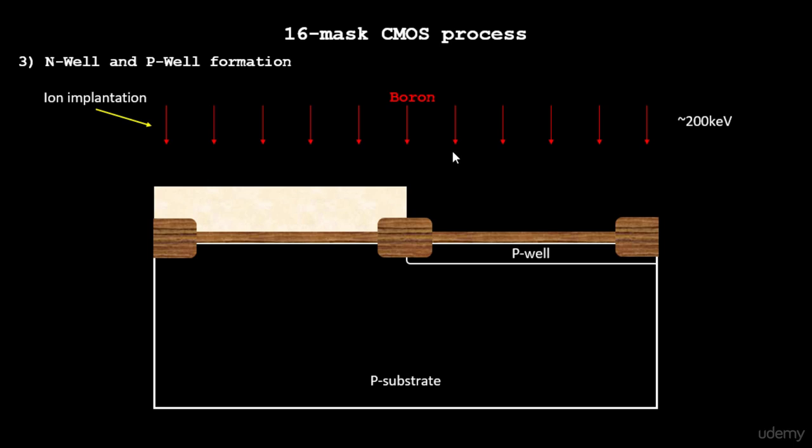For now, we'll just ion implant the boron, which is the positive type material, into the substrate using ion implantation with a high energy of 200 kilo electron volts.